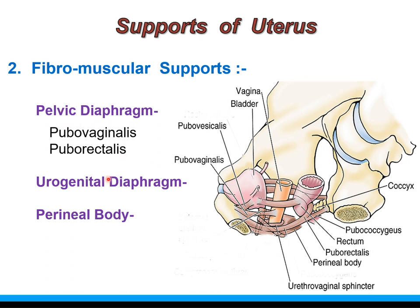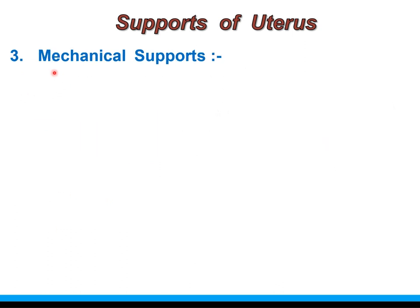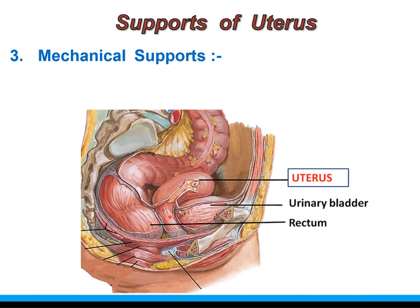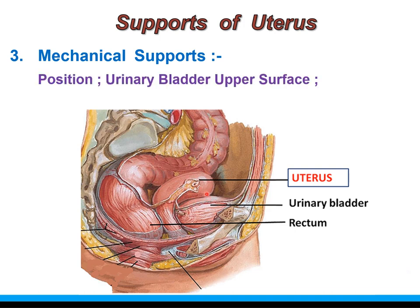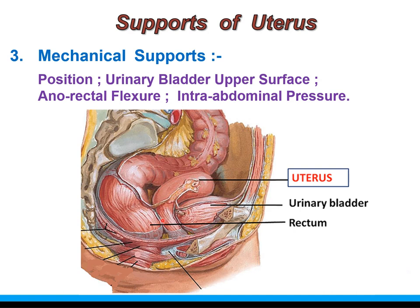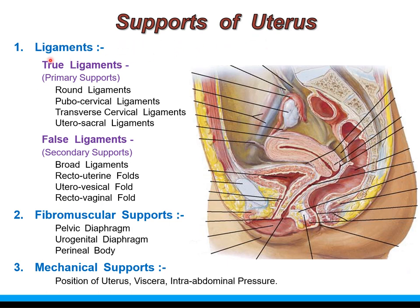The mechanical supports of the uterus are the position of the uterus itself within the pelvic cavity — anteversion and anteflexion — and the relation of adjacent viscera: the superior surface of the urinary bladder on which the body of the uterus rests, and the anorectal flexure on which the vagina rests, maintaining both anteversion and anteflexion. Intra-abdominal pressure also helps maintain the position of the uterus. So the supports of the uterus are ligaments, fibromuscular supports, and mechanical supports.